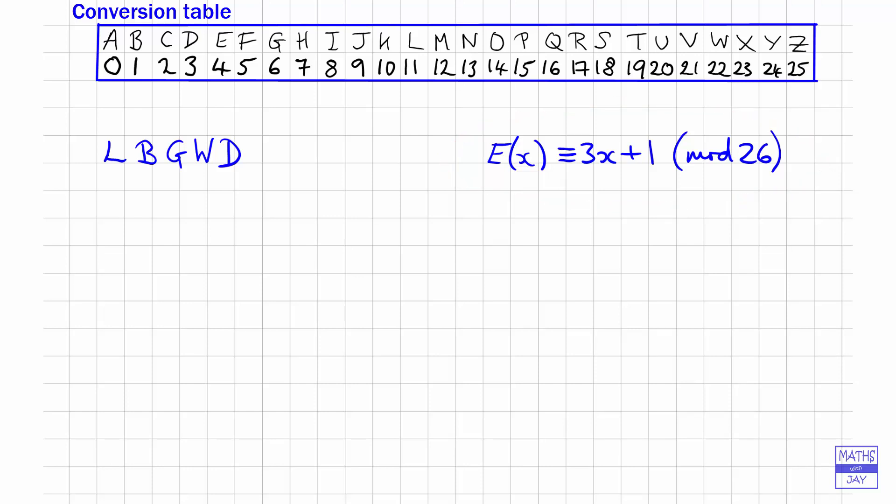So what we need to do to decipher the message is to do the opposite of multiplying by 3 and adding 1.